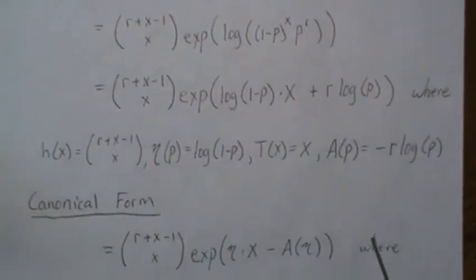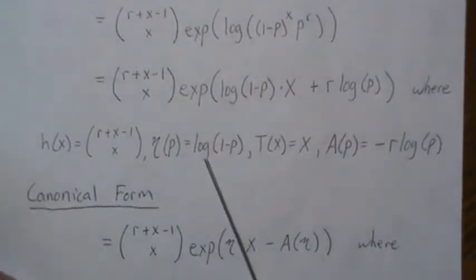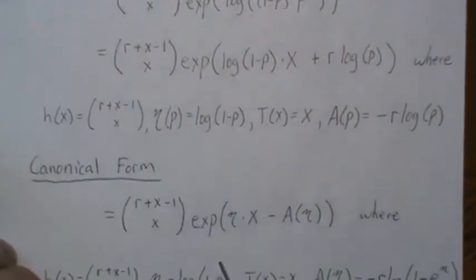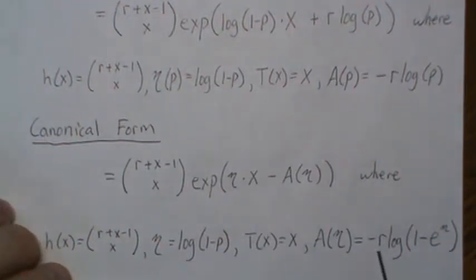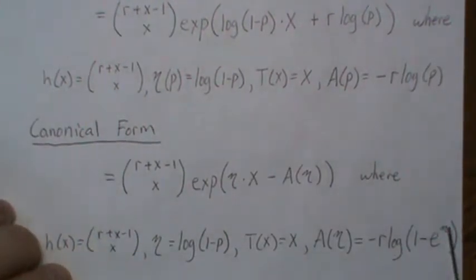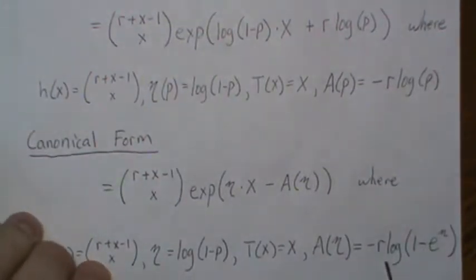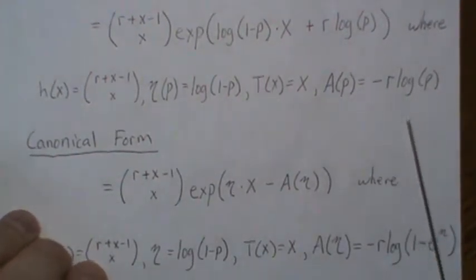Now to put this in canonical form, you just think about this as just eta, not log of one minus p, just eta, right there. And then times a sufficient statistic. And then this log partition is determined, so that we get this back based on eta. And that is if it's minus r log of one minus e to the eta. So if you stick in log of one minus p here, then the log and the e cancel, and you get one minus p, then the one minus one cancels, and you just get p. So it's minus r to the, so we get this back.